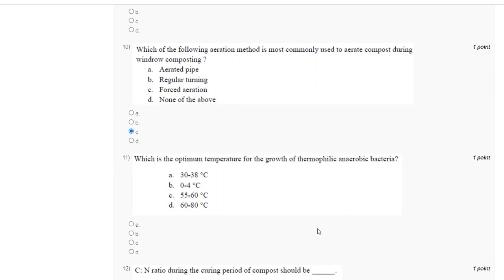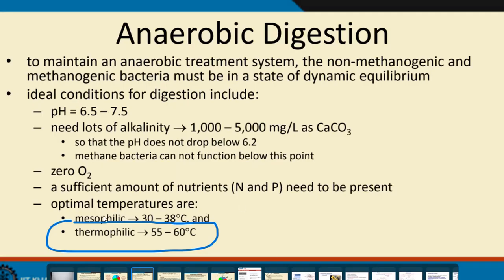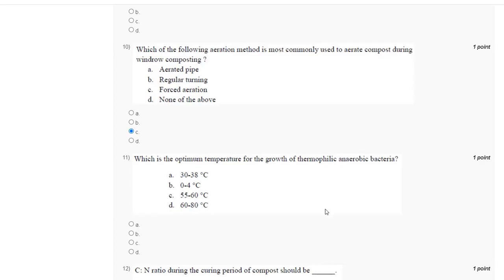Question number 11: what is the optimum temperature for the growth of thermophilic anaerobic bacteria? For thermophilic bacteria, the optimum range is up to 60 degrees Celsius. The correct answer is option C.